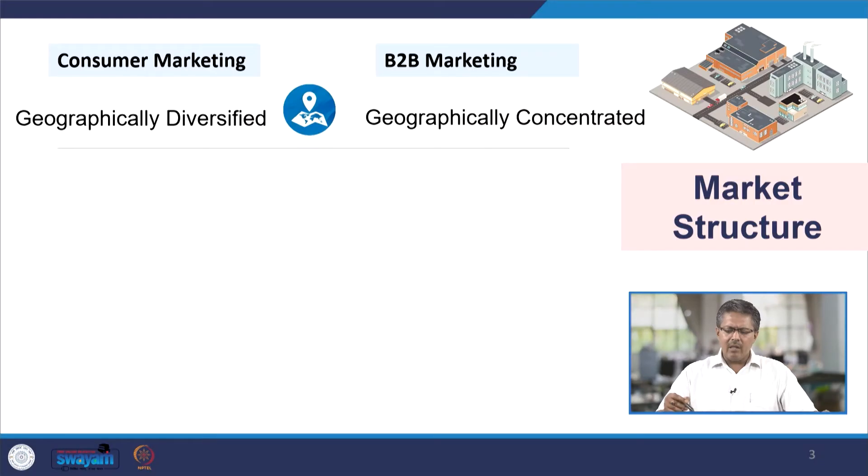The producers are all close to one another, and there is a genuine reason why these industries are concentrated in nature — because they are generally close to their buyers. When the seller and buyer are close to each other, the cost of operations, the cost of transaction, and the supply chain cost all come down substantially. That is one major difference between these two markets.